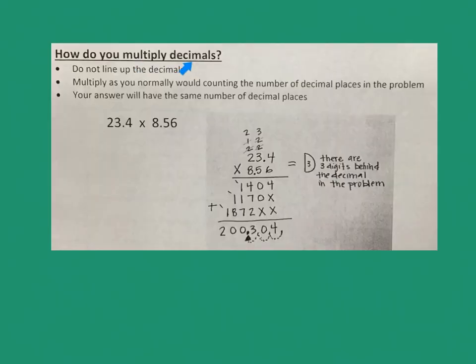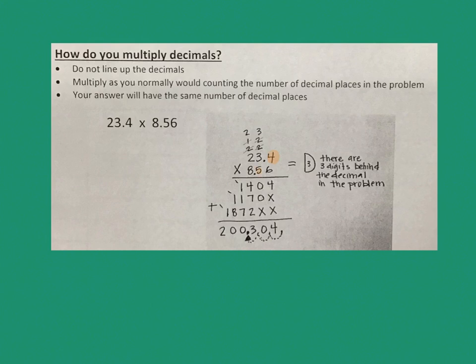Multiplying with decimals — a quick review. It's not important to line up the decimals. You simply multiply like normal and pretend the decimals aren't there. You have to count the number of decimal places the problem has. I need to count all the numbers behind the decimal: there's a 4, a 5, and a 6. So I put D3 on the side, because I want to make sure I put 3 digits behind the decimal once I complete my answer. You can see 1, 2, 3 spots that I moved back behind the decimal when I fill in my final answer.